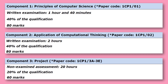This course has three components: two exams and one NEA, which stands for Non-Exam Assessment, which is in the form of a programming project. Normally both exams would be worth 40% of the overall grade and the NEA would be the remaining 20%. But due to issues at the moment with the NEA, it isn't counting towards the final grade, so both exams are effectively worth 50% each.